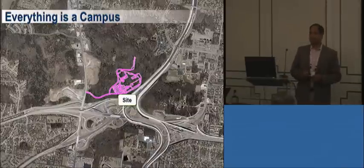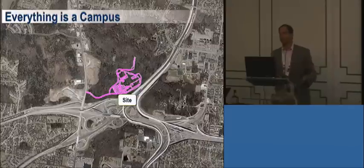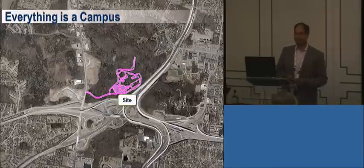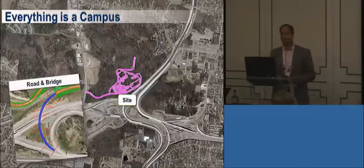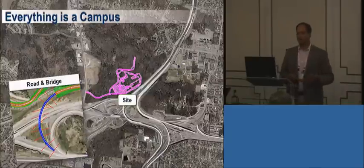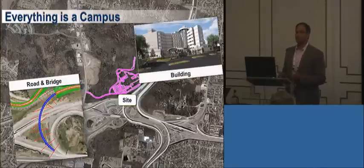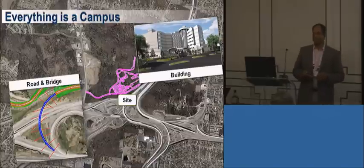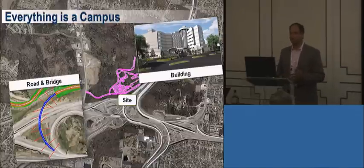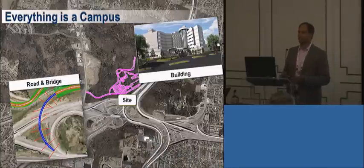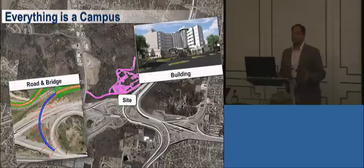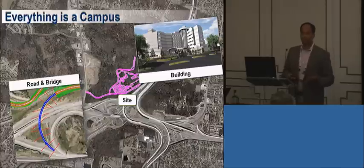First, you've got to figure out where the site's going to be — what kind of grading you'll need, how much cut and fill, what type of soil, what kind of bearing. There's an adjacent freeway you might have to adjust, adding an on-ramp, exit ramp, or a new flyover for access to the hospital. That's why we don't like to use the word 'building' in building information modeling — the building is just a part of it, and there's a lot more that must be brought into the whole picture.